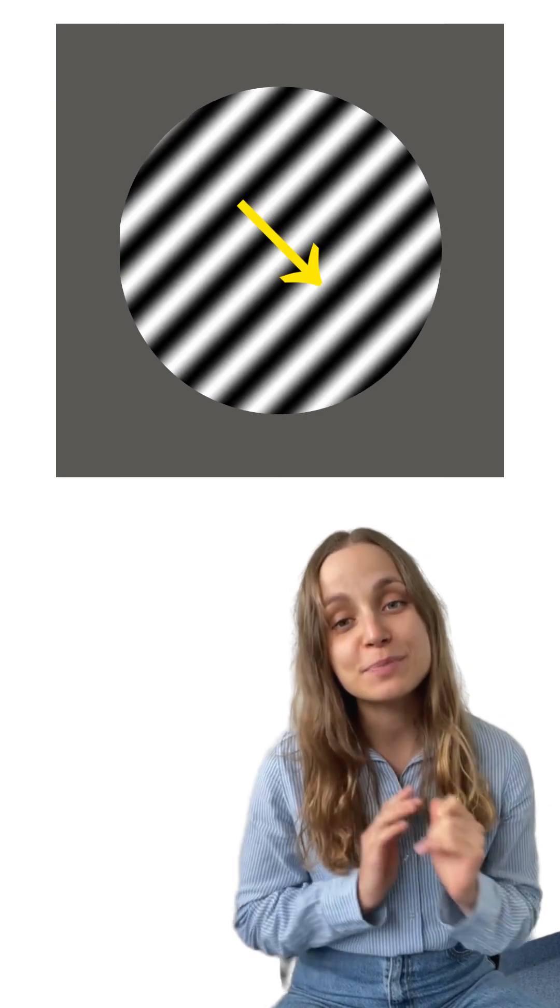What if the aperture is a square or a circle? Interestingly, in these cases, your brain tends to interpret the motion as the slowest possible speed, essentially moving perpendicular to the direction of the stripes.